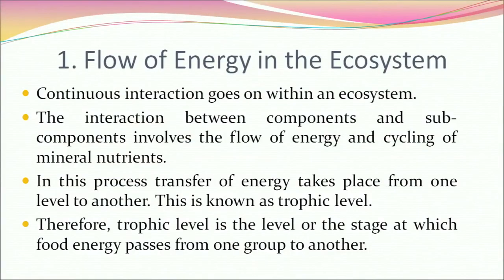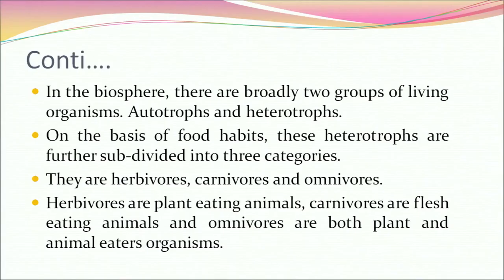Continuous interaction goes on within an ecosystem. The interaction between components and subcomponents involves the flow of energy and cycling of mineral nutrients, where transfer of energy takes place from one level to another — known as a trophic level. In the biosphere, there are broadly two groups: autotrophs and heterotrophs. Heterotrophs are further subdivided into herbivores — plant-eating animals — carnivores — flesh-eating animals — and omnivores, who eat both plants and animals.